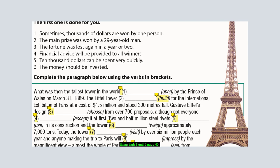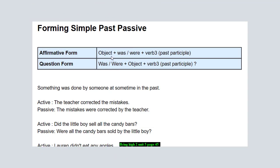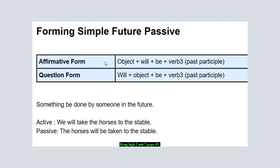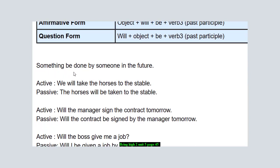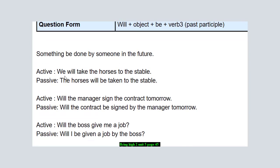Let's take the future rule. Look now at the forming simple future passive. Look at the affirmative form: object plus 'will' plus 'be' plus verb three, which is the past participle. The main use for the future is something will be done by someone in the future. Let's see the active form of the future passive: 'We will take the horses to the stable.'